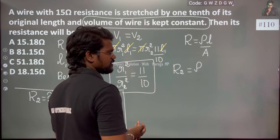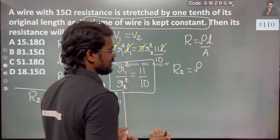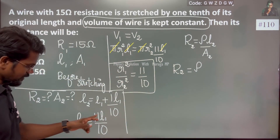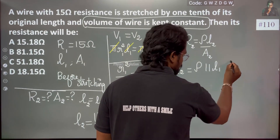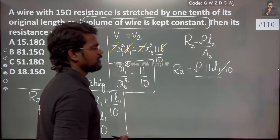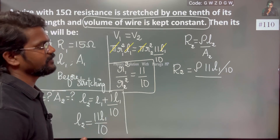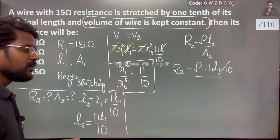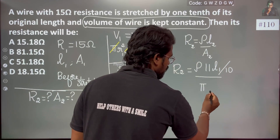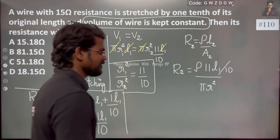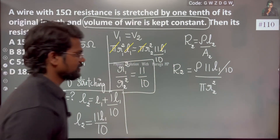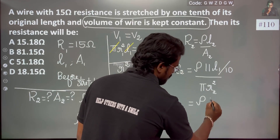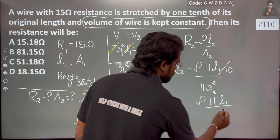Rho is constant since it is the same material. R2 equals Rho times L2, which is 11L1/10, divided by area A2, which is pi R2². For the second wire, the area is pi R2 square. Using volume conservation, R2² equals R1² times 10 divided by 11.